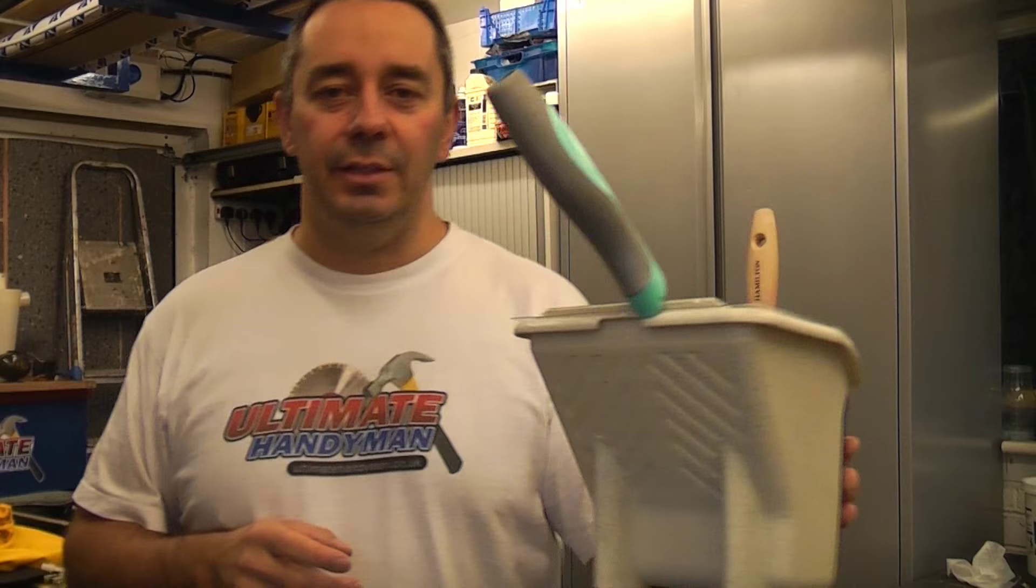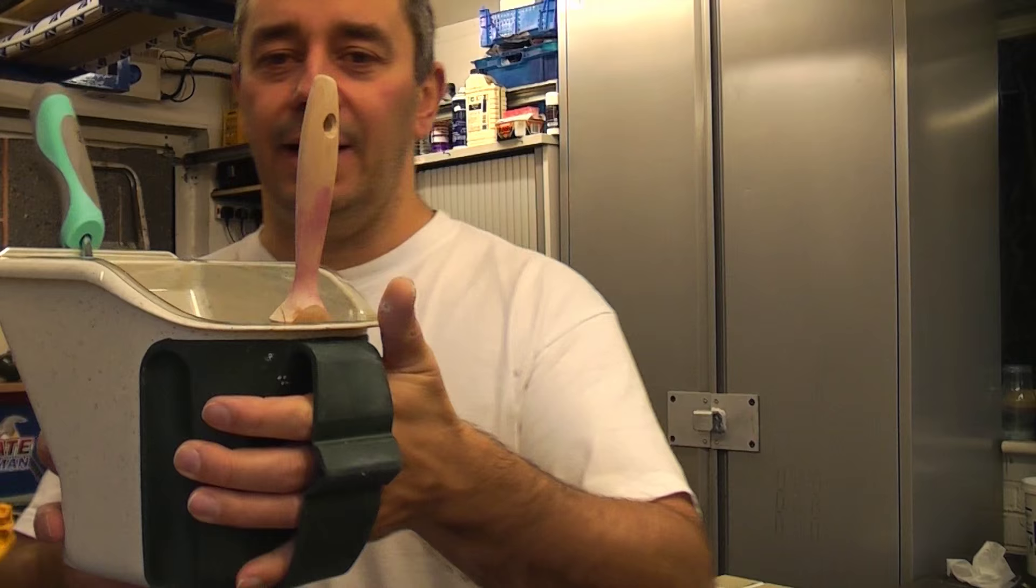This is the Worcester Pellican. It's actually a tray for holding a roller and a brush at the same time.